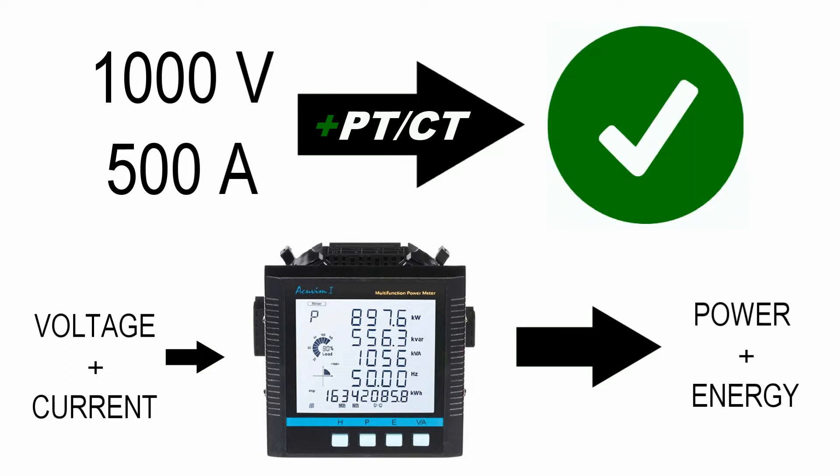As a result, the meter will see the reduced version of voltage and current. In order for the meter to report actual values, installers are required to set up the PT and CT ratio on the meter.